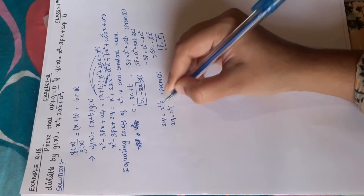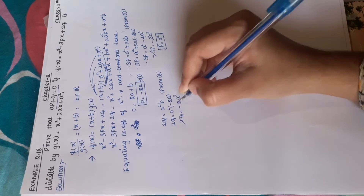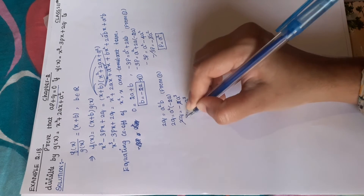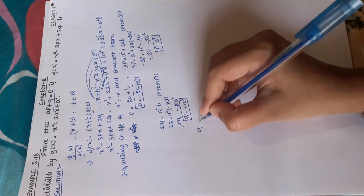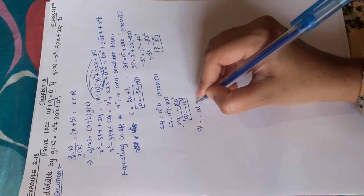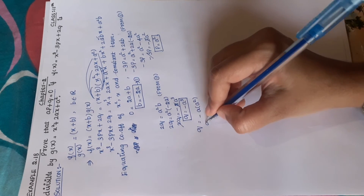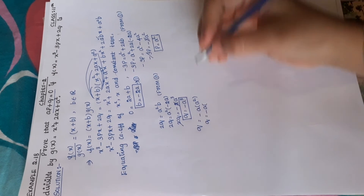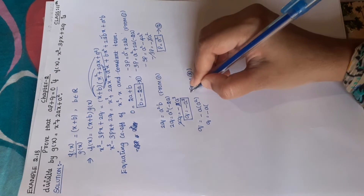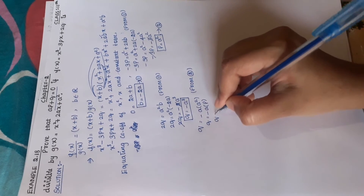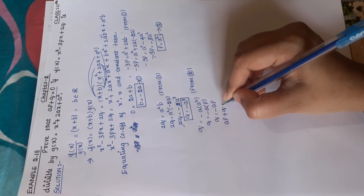Now from the constant term: 2q equals a square b. Substituting b equals minus 2a, we get 2q equals minus 2a cube, so q equals minus a cube. Therefore ap plus q equals a into a square plus minus a cube equals a cube minus a cube equals zero.